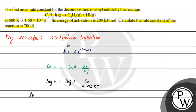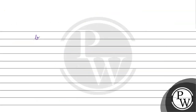If we don't write the rate constant for two reactions, we can write: log of k2 is equal to log of A minus Ea by 2.303 RT2. And we can write log of k1 is equal to log of A minus Ea by 2.303 RT1, where there will be a 2.303 factor.